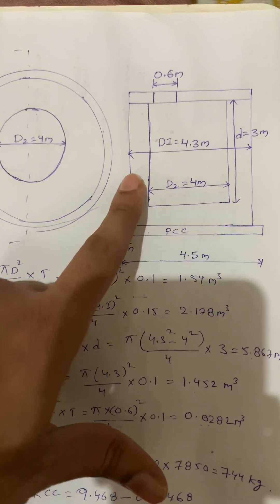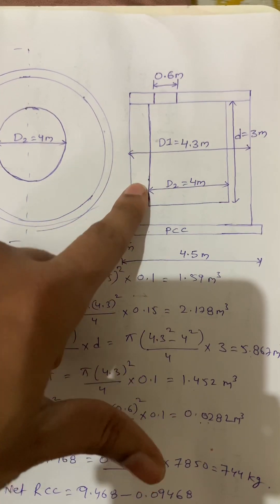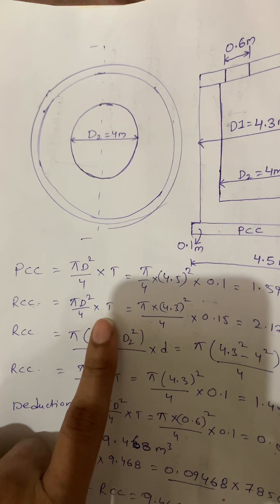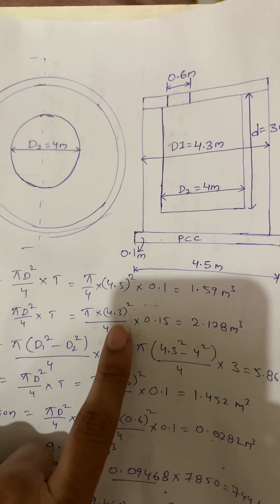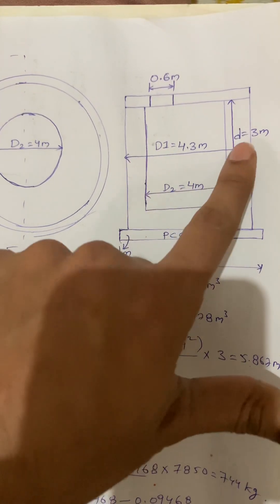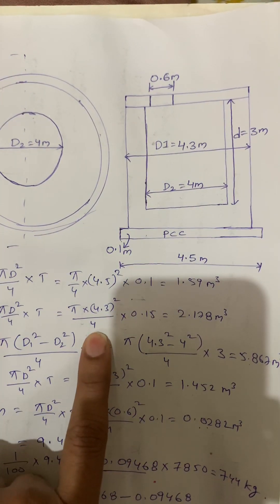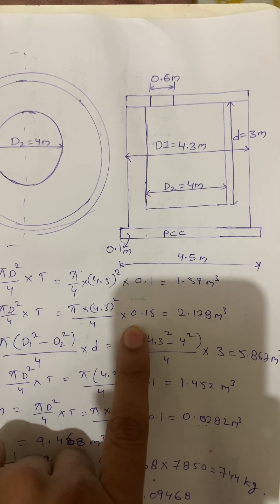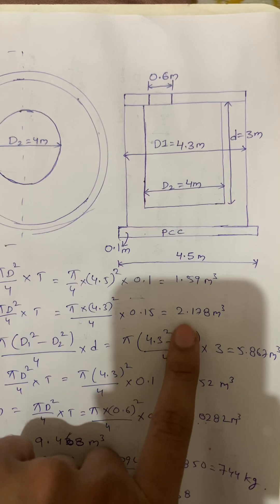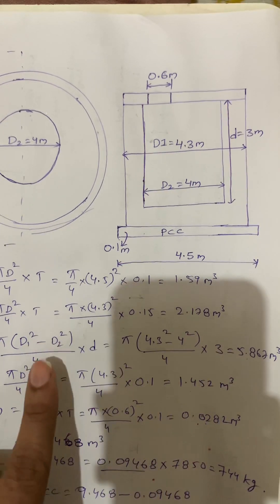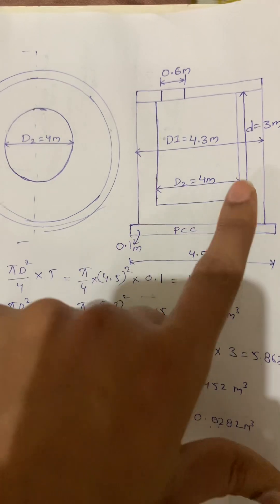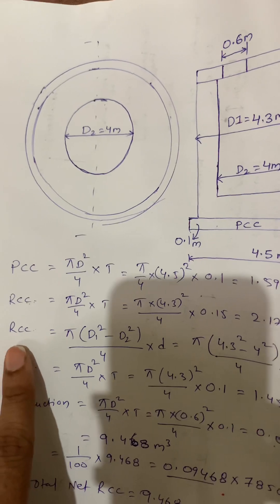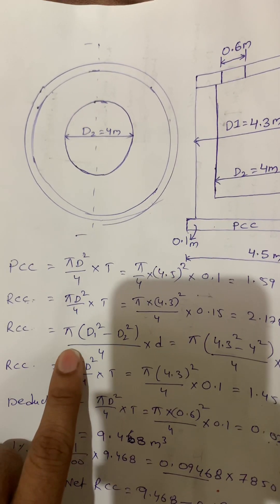Next I am calculating the concrete quantity — RCC — of the wall. The formula is π D² / 4 × thickness. Using outer diameter 4.3 meters squared by 4, and considering the thickness of the wall as 0.15 meters. I got 2.178 meter cube.